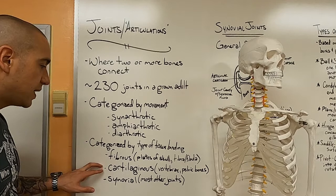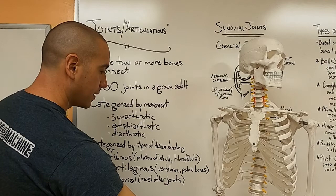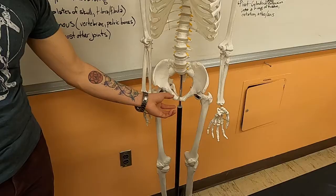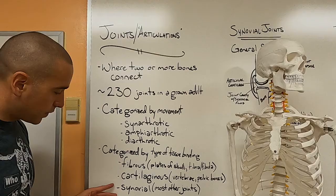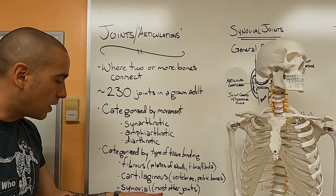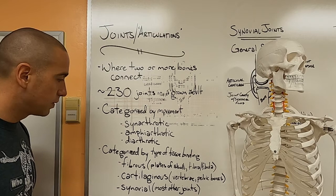There are also cartilaginous joints. And these have cartilage between them. You can see the cartilage discs in the vertebrae and the cartilage here at this junction of the two pelvic bones. Synovial joints are what most other joints are. And that's what we're going to focus on for the next two parts.